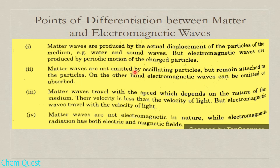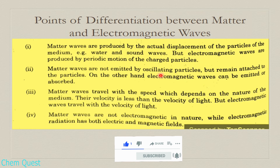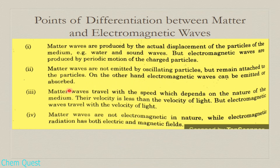Another difference is that matter waves are not emitted by oscillating particles but remain attached to the particles. Electromagnetic waves, however, can be emitted or absorbed. If particles vibrate, they do not emit matter waves, because emission and absorption are properties of electromagnetic waves.